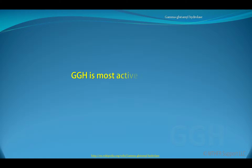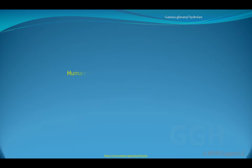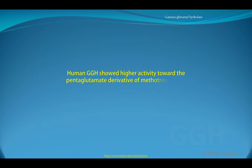GGH is most active at acidic pH. Human GGH showed higher activity toward the pentaglutamate derivative of methotrexate and had little activity against the diglutamate derivative.